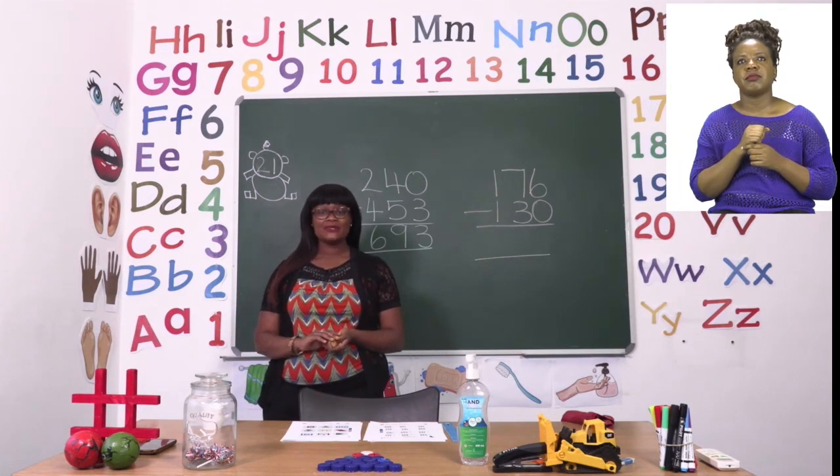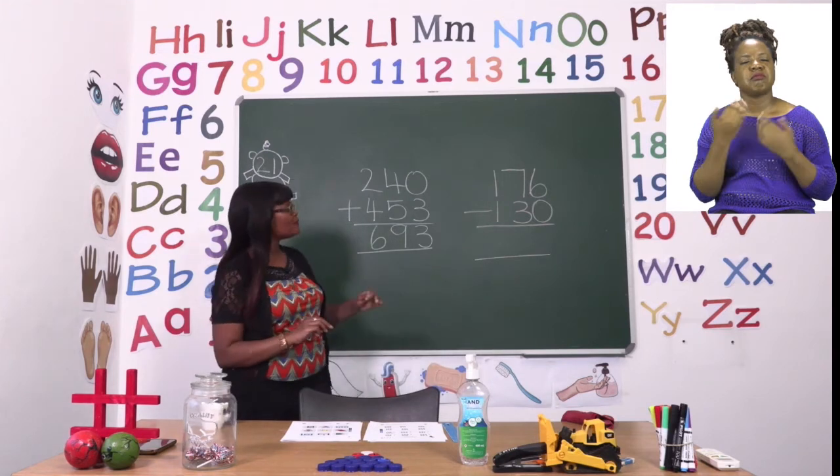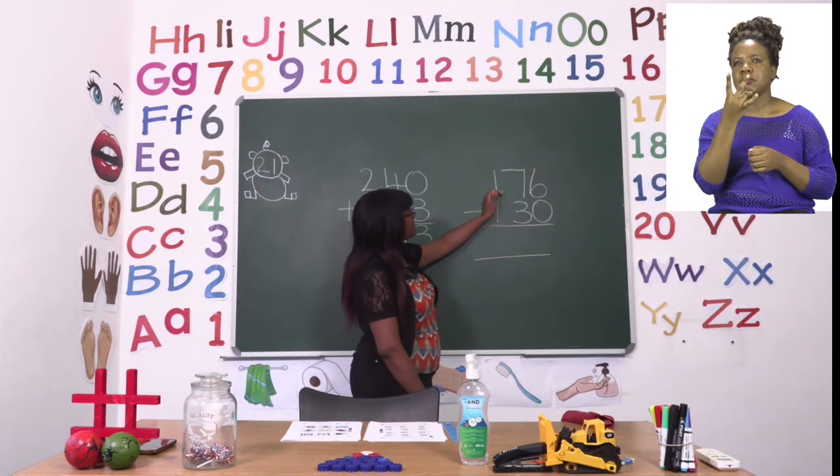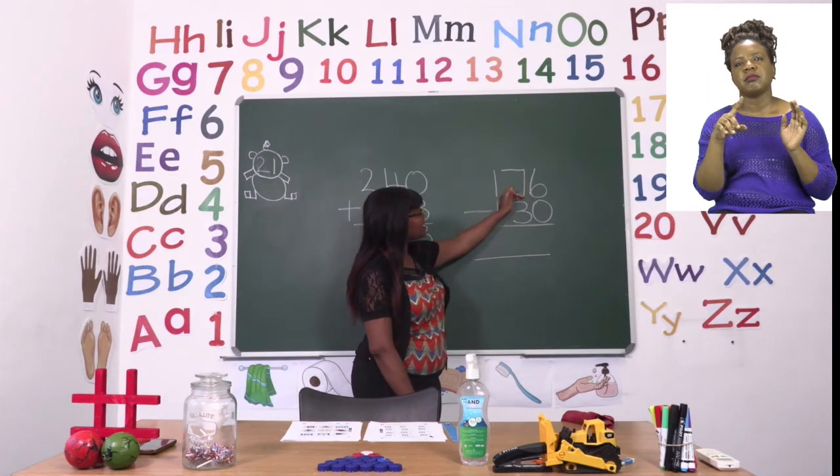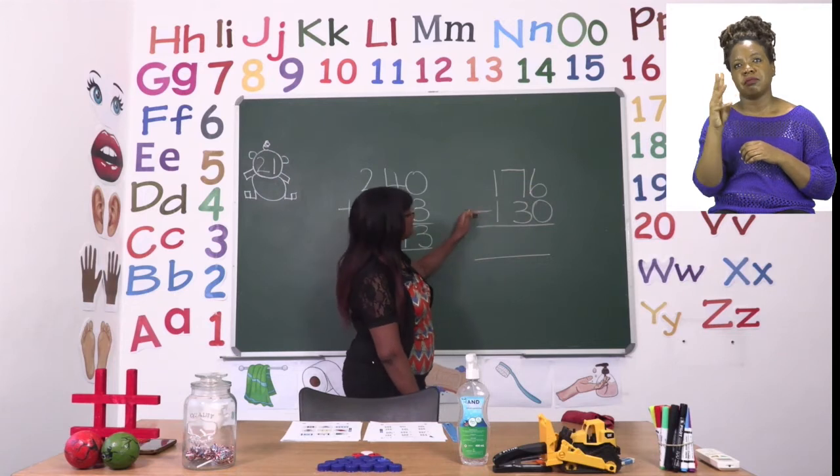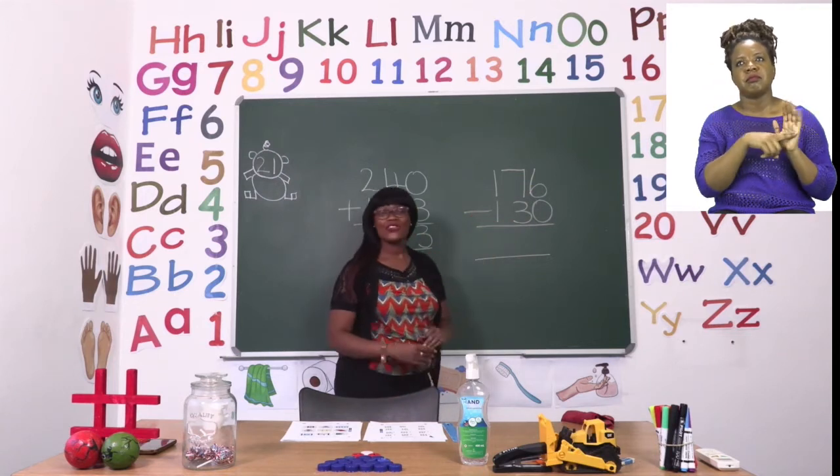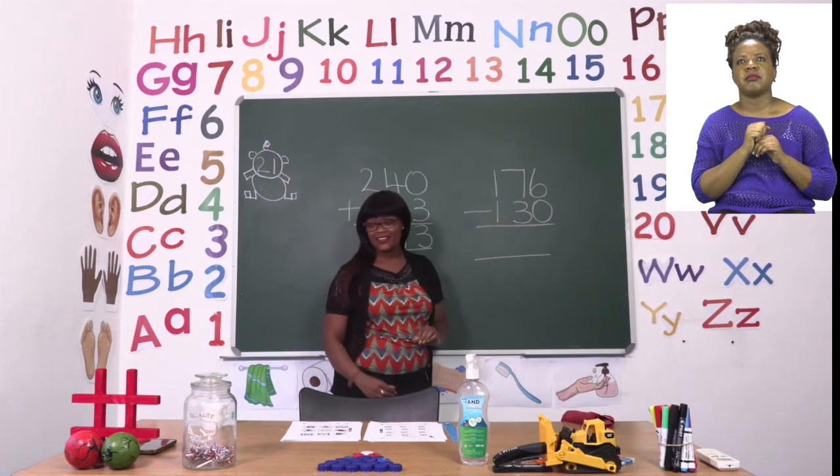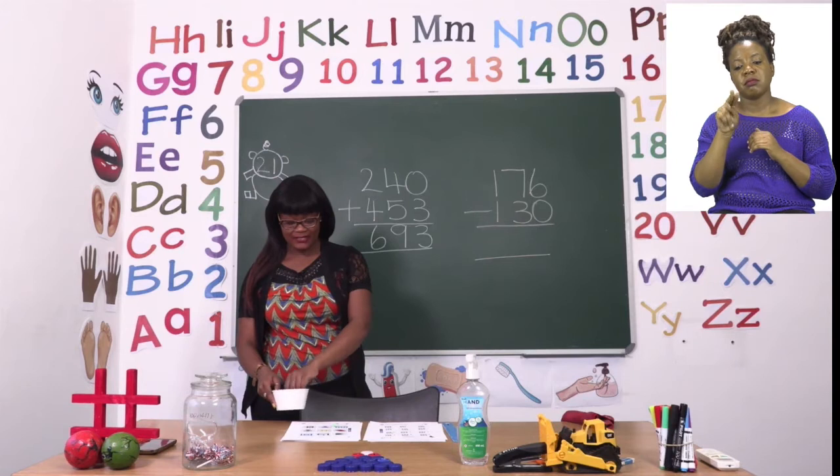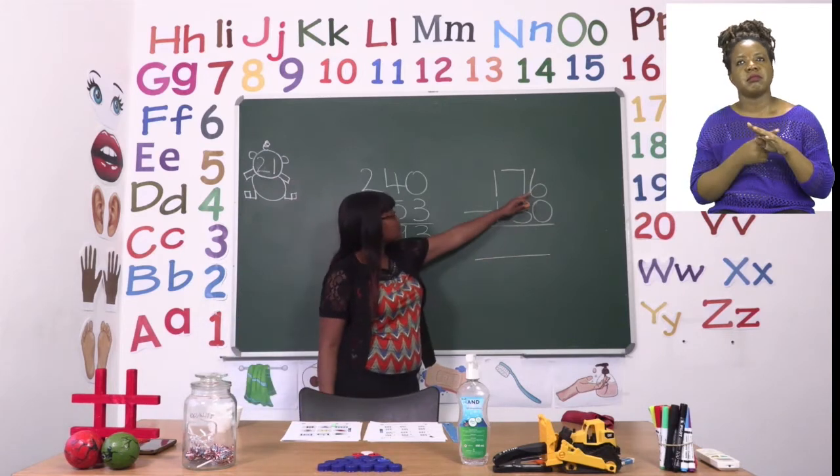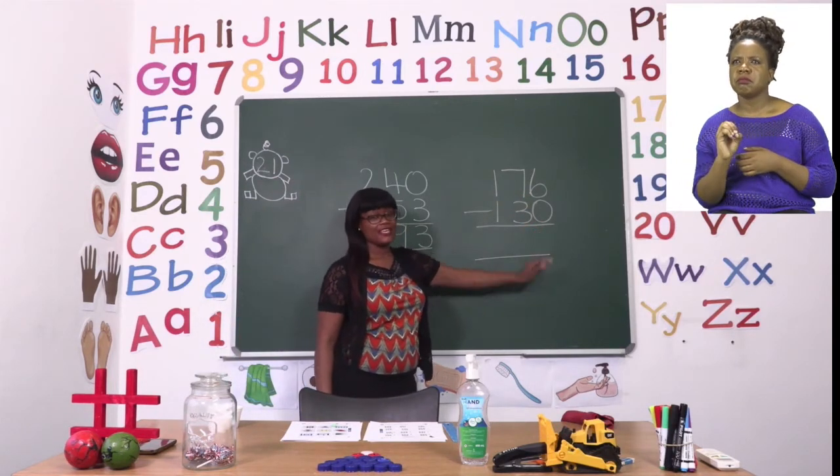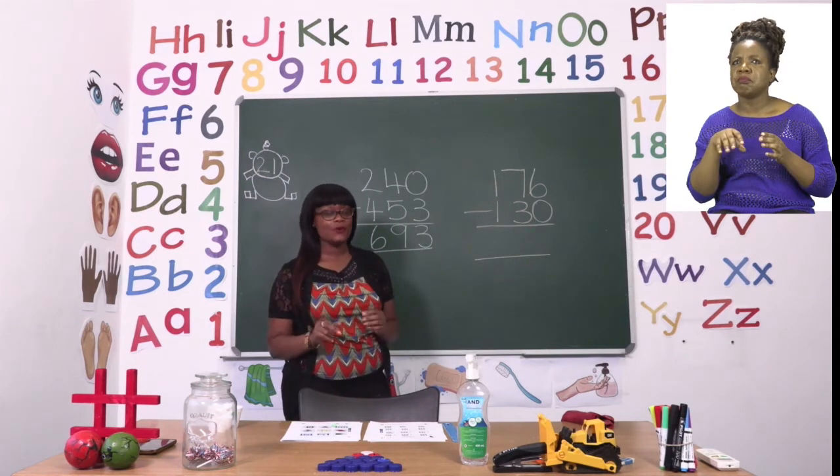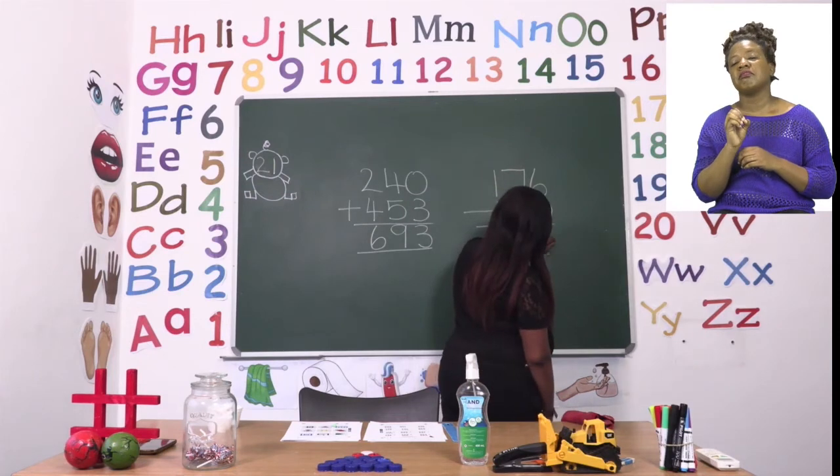The subtraction that we're going to do is simple. So I have one right here for you. This one says 176 minus 130. So we're going to start by the unit side as always. We're going to say 6 minus 0. Now we have 6 things and we are taking away 0. Our answer will be 6.